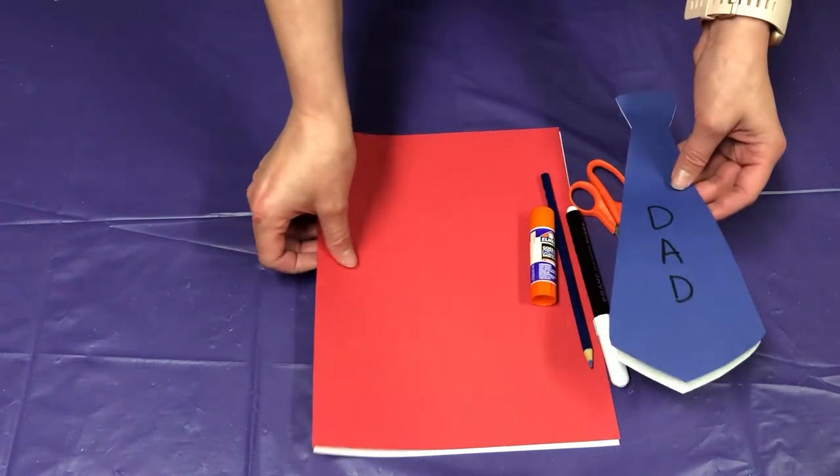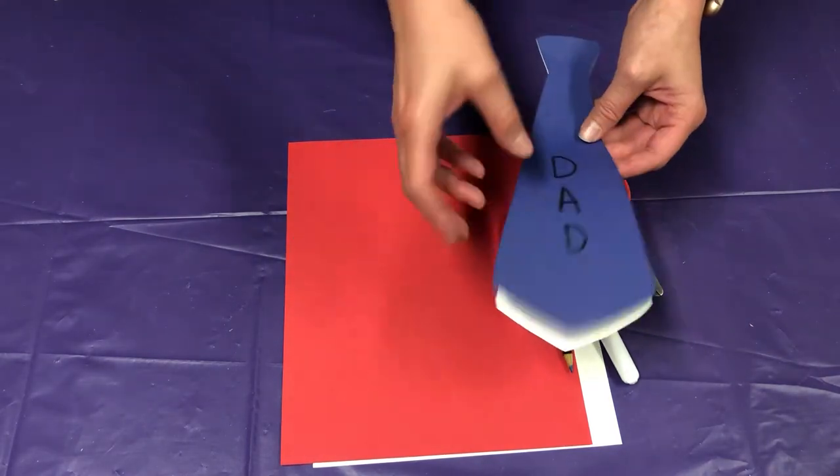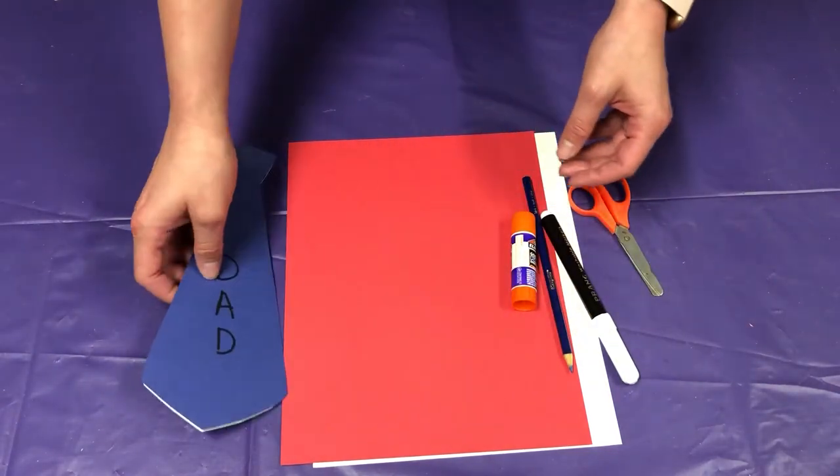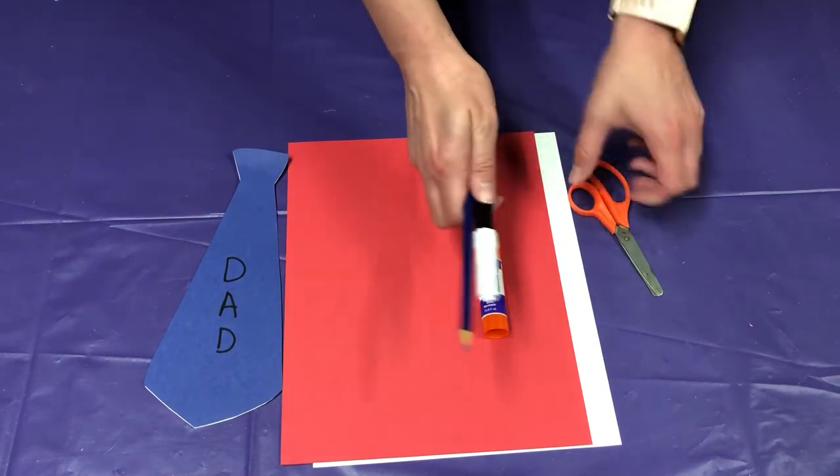So what you're going to need is some construction paper. I used a colorful one on top and then a white piece on the bottom, but you can use whatever color you want. You'll also need a glue stick, something to draw your tie with, a marker, and some scissors.